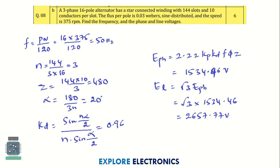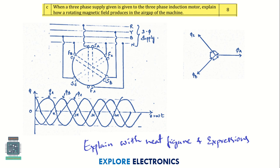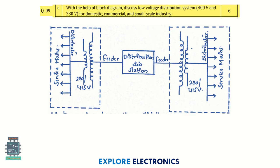Question 8B: a three-phase 16-pole alternator has star-connected winding — find the frequency and the phase and line voltages E_ph and E_L. Question 8C: when a three-phase supply is given to a three-phase induction motor, explain how rotating magnetic field produces an air gap in the machine. You need to write phasor diagrams and provide expressions with explanation.